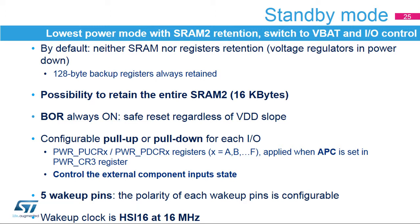The standby mode is the lowest power mode in which the 16 kilobytes of SRAM 2 can be retained. The automatic switch from VDD to VBAT is supported and the I/O level can be configured by independent pull-up and pull-down circuitry. By default, the voltage regulators are in power-down mode and the SRAM contents and peripheral registers are lost. The 128-byte backup registers are always retained. The brownout reset is always on to ensure a safe reset regardless of the VDD slope. Each I/O can be configured with or without a pull-up or pull-down which is applied and released thanks to the APC control bit. Five wake-up pins are available to wake up the device from standby mode, and the polarity of each of the five wake-up pins is configurable.